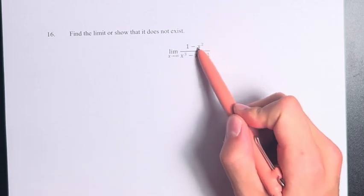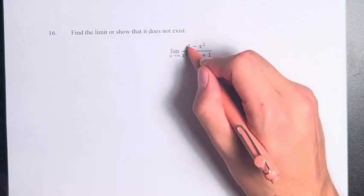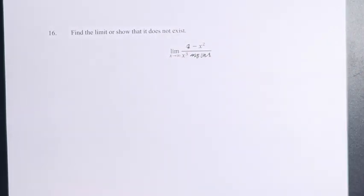So in the numerator, that's this x squared term, and the denominator, that's the x cubed term. Basically what we can do is we can cross out all the other terms because they don't matter.